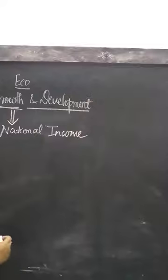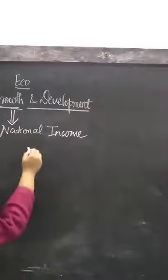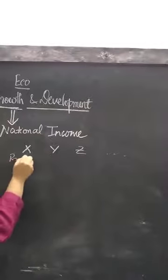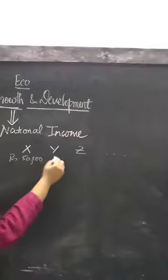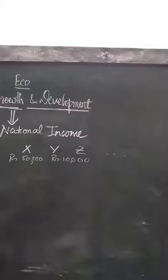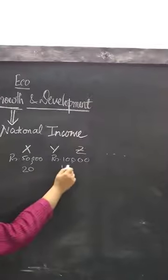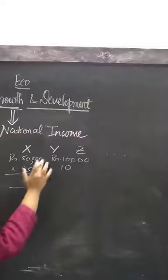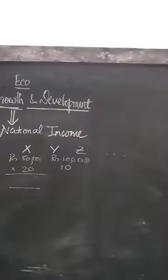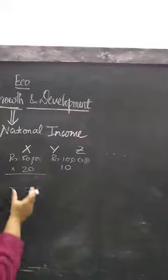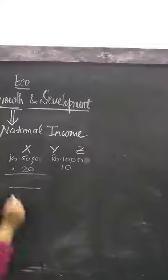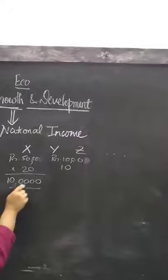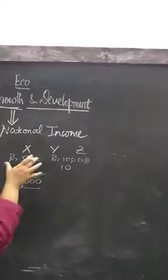This national income can increase because of 2 to 3 reasons. How income comes — suppose the country can produce x, y, z, there are many products, each having a particular value. Suppose x is priced at 5,000 and y at 10,000. The production is suppose 20 units and 10 units respectively. Suppose the price of each unit of x, if you sell in the market, the price is 5,000 and you sell 20 units — that means 1 lakh is the expected income from this x commodity.